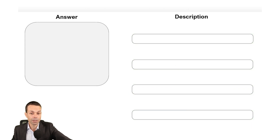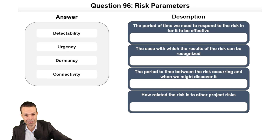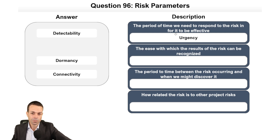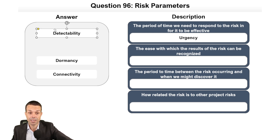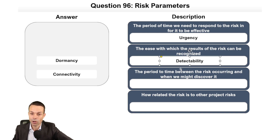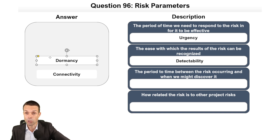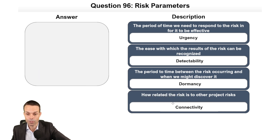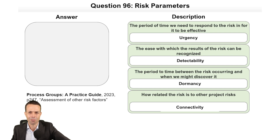Now risk parameters: the period of time needed to respond to a risk for it to be effective is urgency. The ease with which results of the risk can be recognized is detectability. The period of time between the risk occurring and when we might discover it is dormancy. And how related the risk is to other project risks is its connectivity.